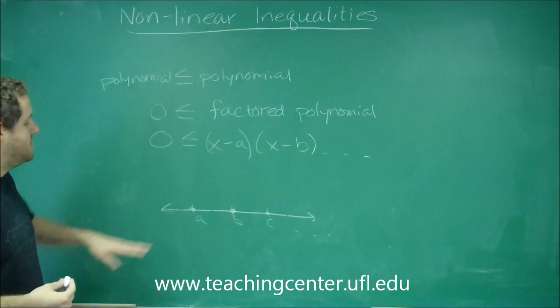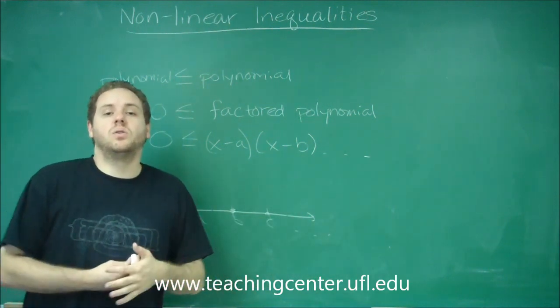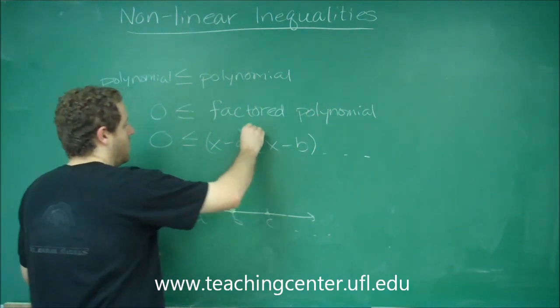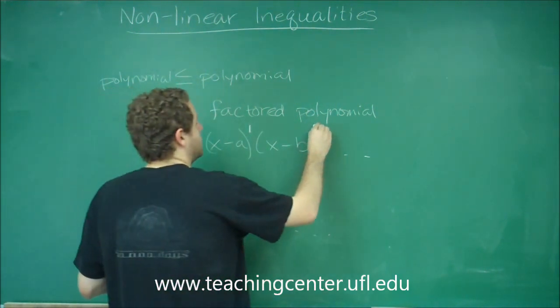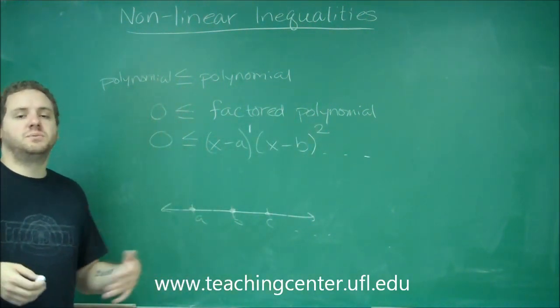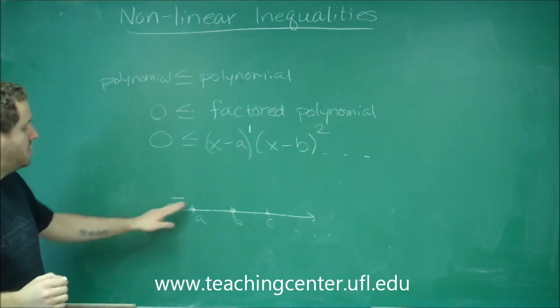The other thing you can do is you really only need to check one, and then you can use the multiplicity test to go along the line. So for example, let's say this power on x minus a was 1, but this power on x minus b was 2. You pick a number left of a and you see what you get. Let's say we got a minus here.